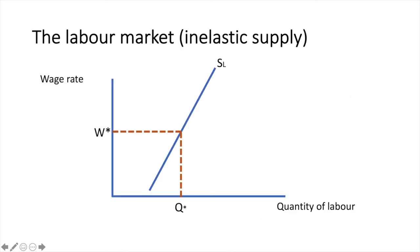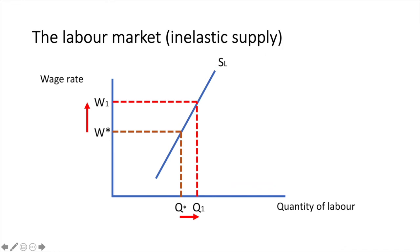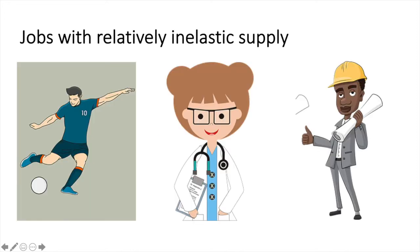Jobs that require a high degree of skill, education, or training will likely have a supply curve of labour that looks like something like this. An increase in the wage rate results in a less than proportionate increase in the quantity supplied of labour. Even though wages have risen, there will be a limit in the short run supply of labour in such fields. These fields include professional football players, doctors, and architects.